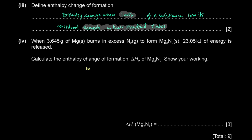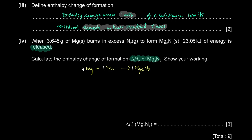We want the enthalpy change for one mole of magnesium nitride. First, find the moles of magnesium: mass divided by molar mass = 3.645 ÷ 24.3 = 0.15 moles of magnesium. For every 3 moles of magnesium we get 1 mole of magnesium nitride, so moles of Mg₃N₂ = 0.15 ÷ 3 = 0.05 moles. So 0.05 moles of magnesium nitride forming releases −23.05 kJ.